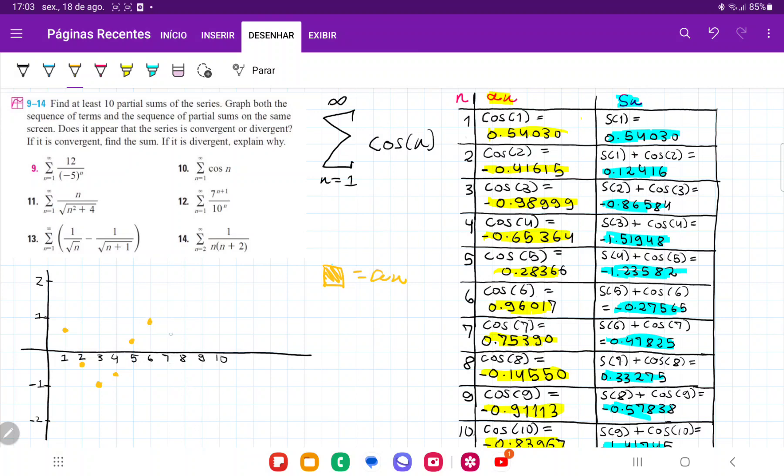Cosine of 7 is 0.75. Cosine of 8 is minus 0.14, so about here. And then cosine of 9 is going to be minus 0.91, so about like so. Cosine of 10 is minus 0.83, so about here.